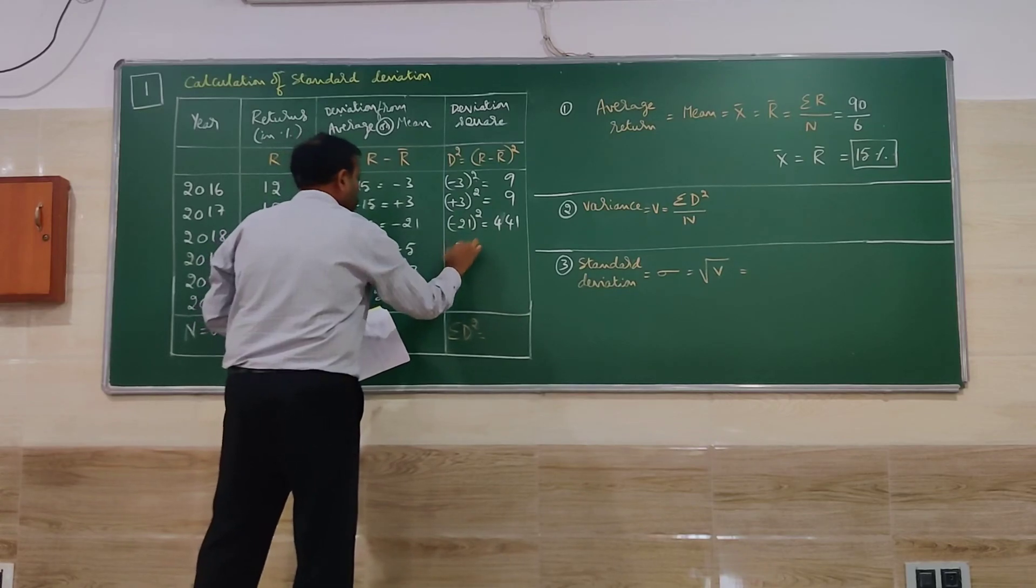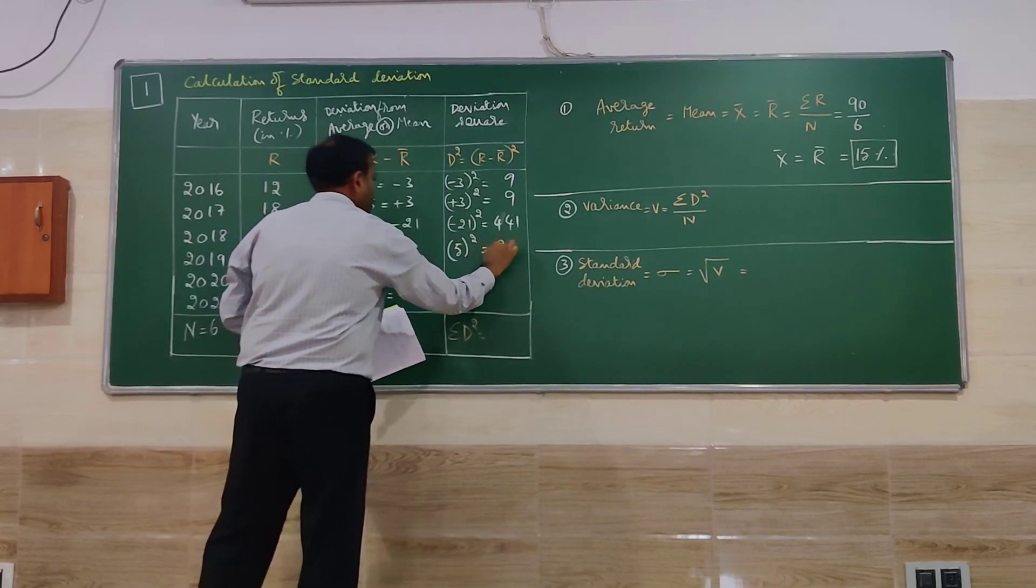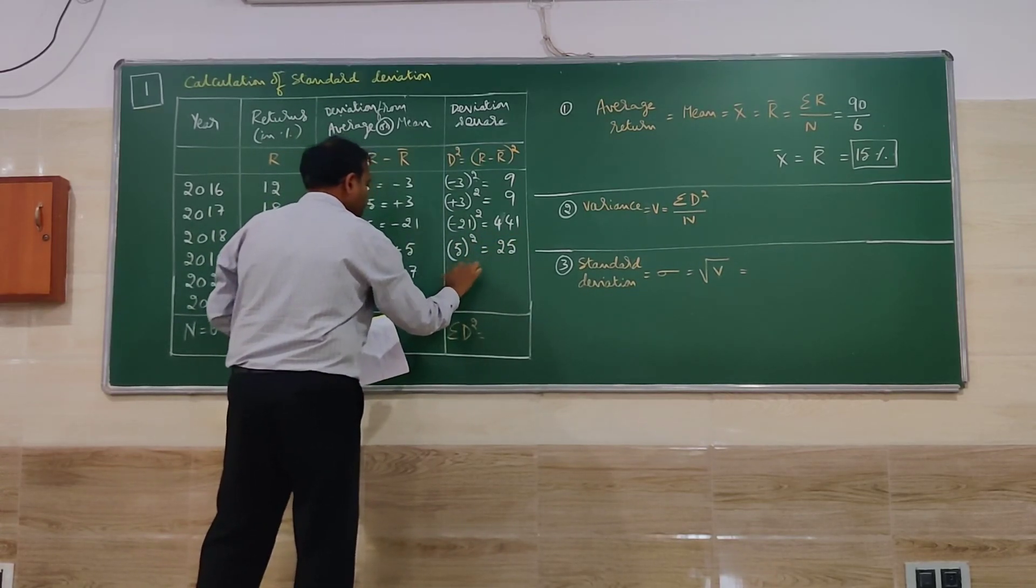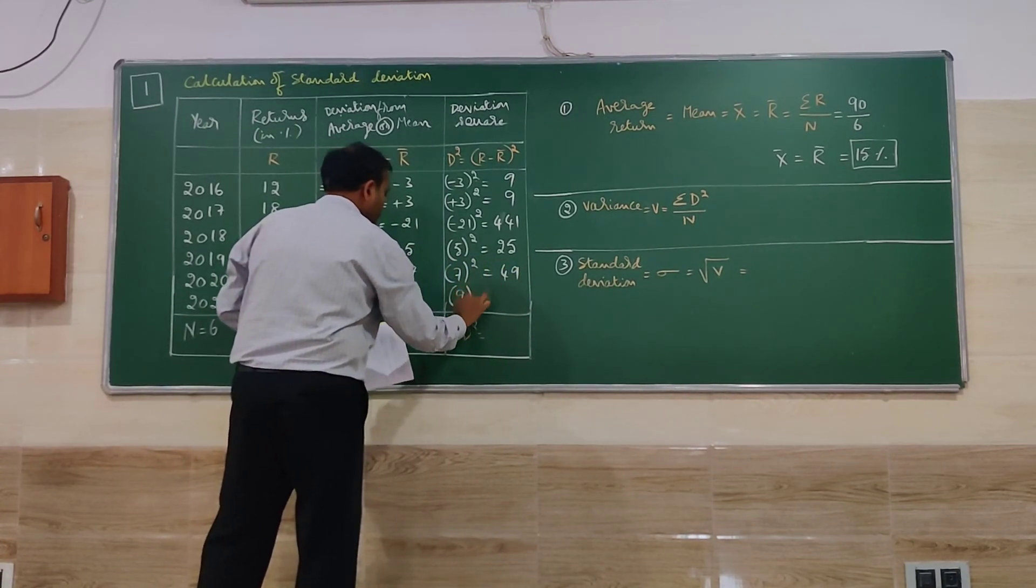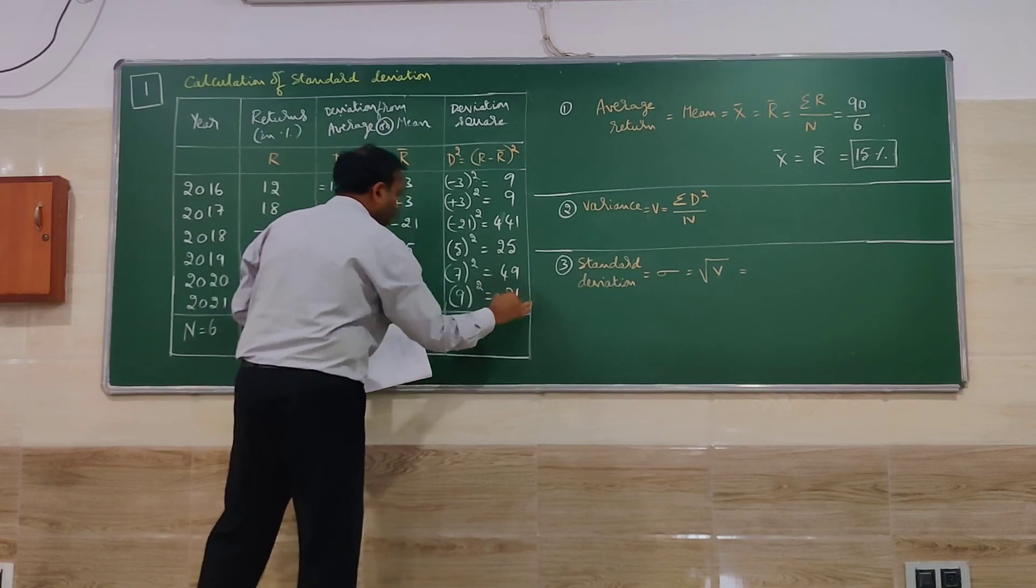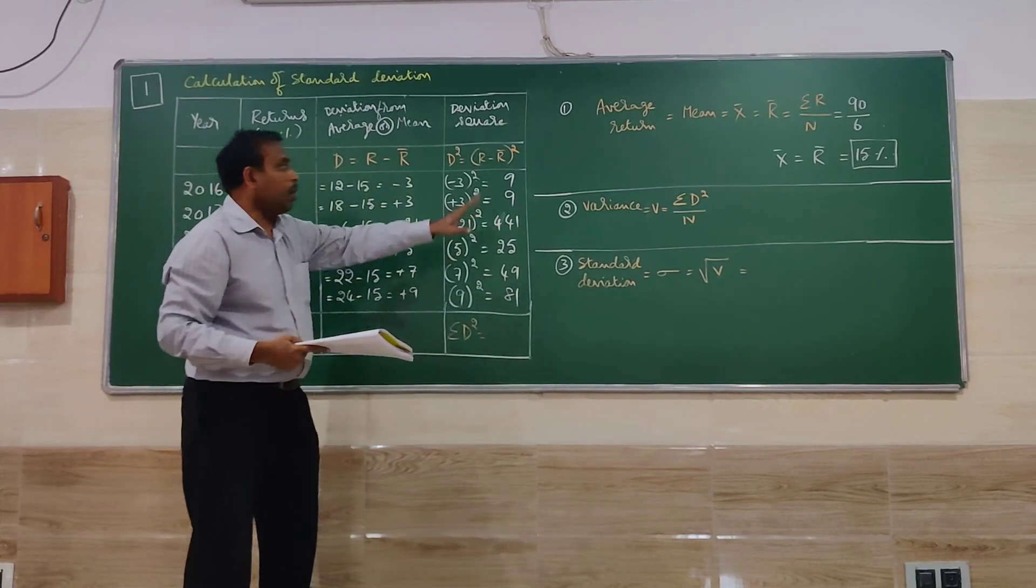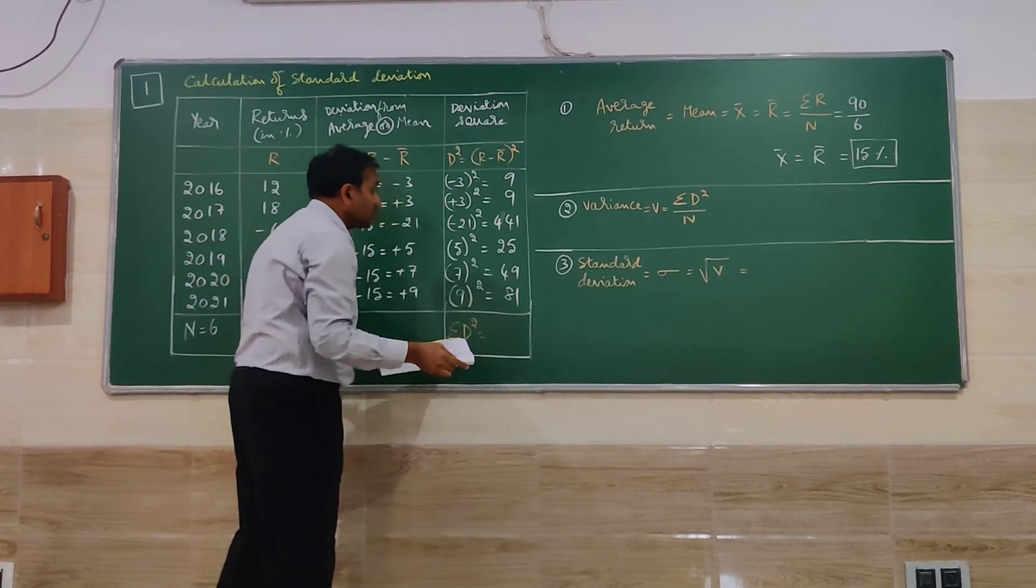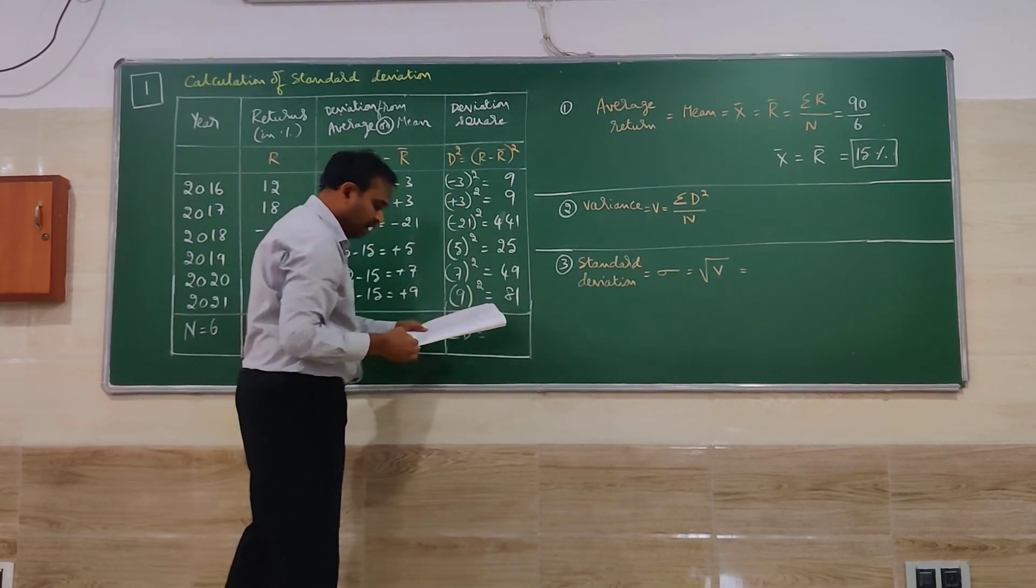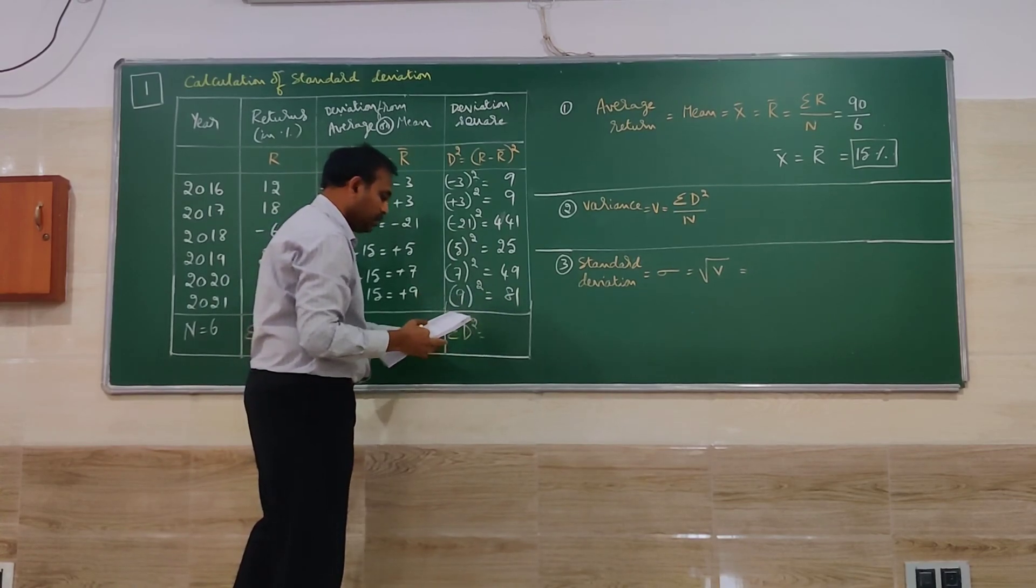Next 5 square is 25. 7 square is 49. 9 square is 81. So when we do this, all are plus values only. So if you do the total, that is called summation D square or total of deviation square. That comes to 614.